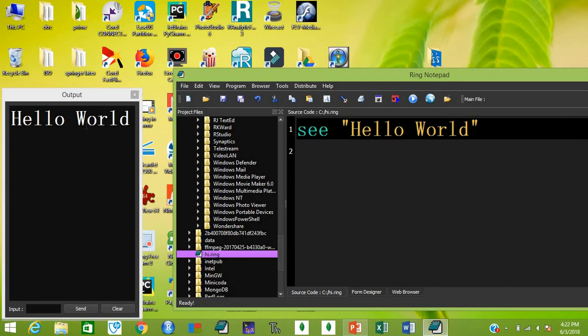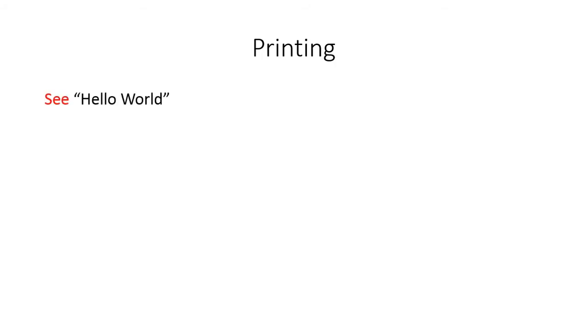Now let's open a file with a hello world script, click run, and the output will be printed to the output window. So let's start our lesson. The first topic is how to print on the screen. Ring is very flexible — you can use several functions for the same thing. You can use the 'c' command for printing, or you can use 'put' instead.